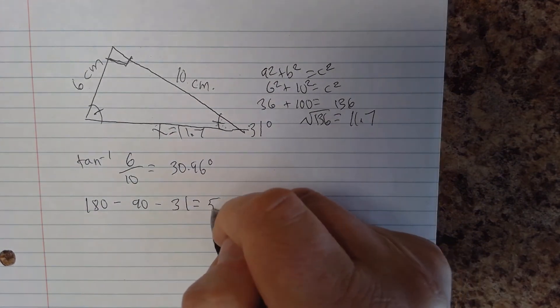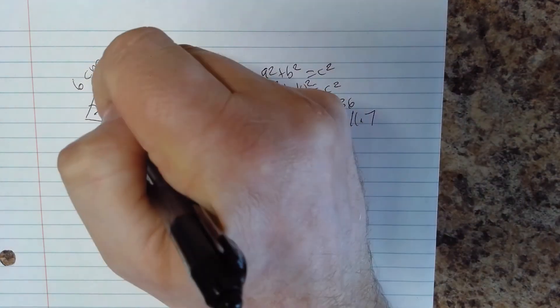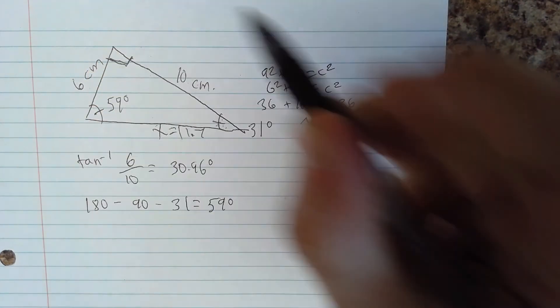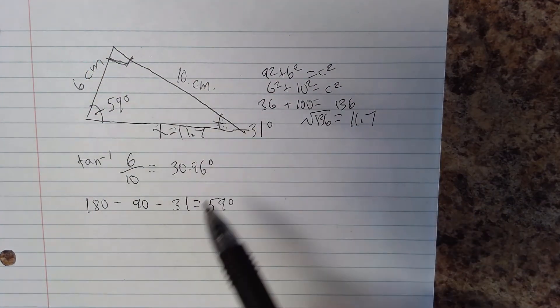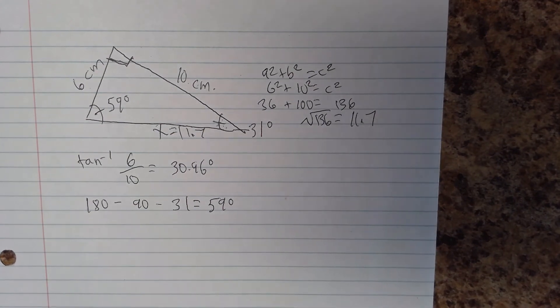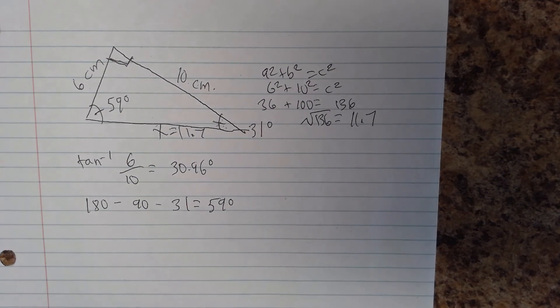59 degrees. So when you know your trigonometry, when you know your Pythagorean theorem, when you remember that our triangle is 180 degrees, you can very quickly use all of those strategies in combination to very efficiently solve any unknowns of any triangle.